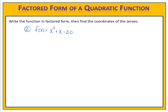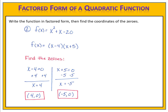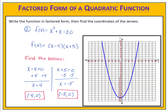Let's see how you did. We began by factoring the trinomial x squared plus x minus 20, which gives us f of x equals x minus 4 times x plus 5. We then use that factored form to find the coordinates of the zeros — we take each factor and set it equal to zero, then solve. We have zeros at 4 comma 0 and negative 5 comma 0. Looking at the graph, we can see those zeros at negative 5 comma 0 and at 4 comma 0.